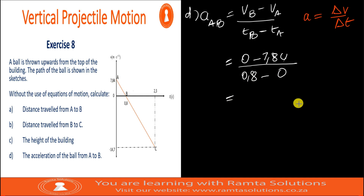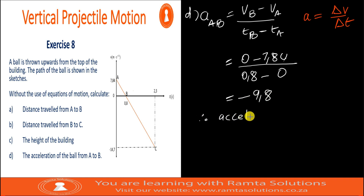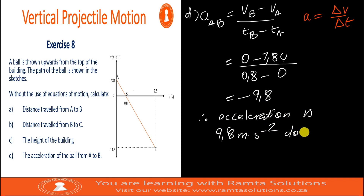So we get 0 minus 7.84 over 0.8. The answer we are getting is negative 9.8. Therefore, acceleration is 9.8 meters per second squared downwards.